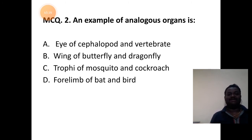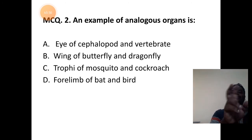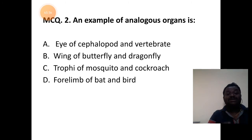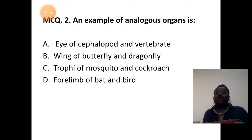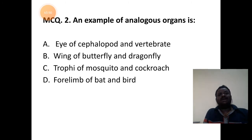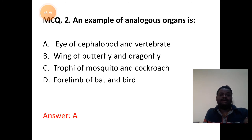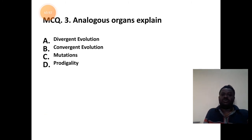Species should be different and function should remain the same. Butterfly and dragonfly come under the same insect group. Profi of mosquito and cockroach — similar type. They are all examples of homologous organs. Forelimb of bat and bird also relates to homologous organs. So example A — eye of cephalopod and a vertebrate — is the correct answer.